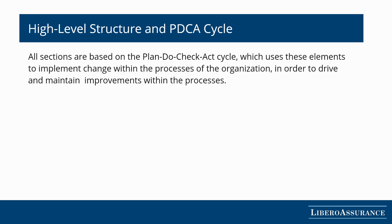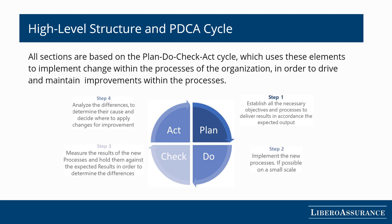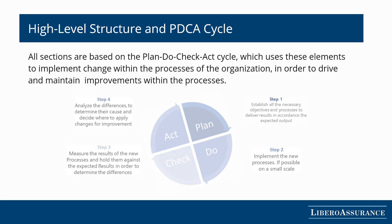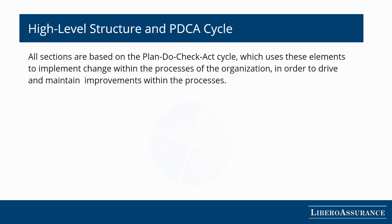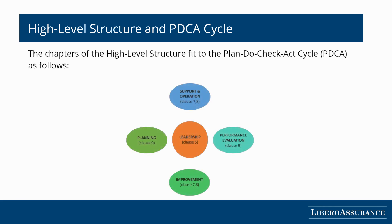All sections are based on the Plan, Do, Check, Act cycle, which uses these elements to implement change within the organization's processes in order to drive and maintain improvements. This Plan, Do, Check, Act chart can be directly linked to the clauses of the high-level structure. The chapters of the high-level structure fit to the PDCA cycle as follows.